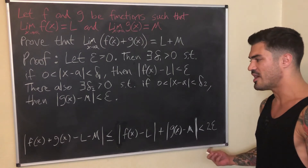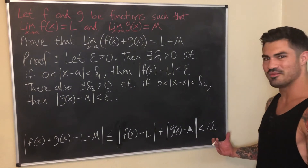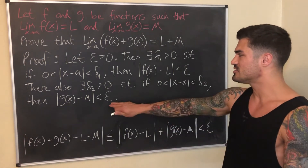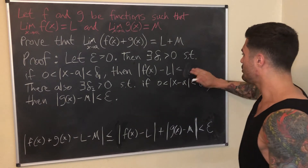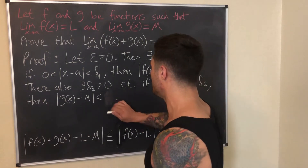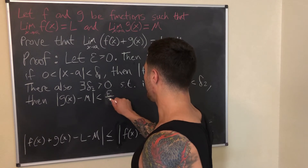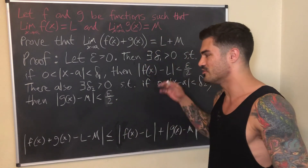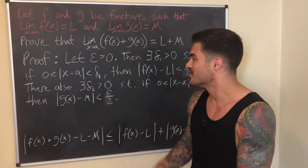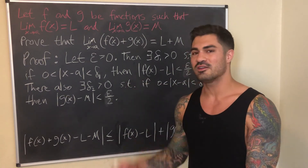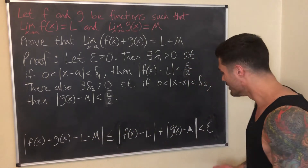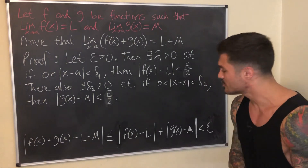But I want this to be less than Epsilon, not 2·Epsilon. So what can I do? I need each piece to be Epsilon/2 instead of Epsilon — that's the clever trick. This is exactly why textbooks just throw 'Epsilon/2' out there like it's obvious. It's not obvious — they've done this scratch work ahead of time and erased it. This scratch work is what tells you how to adjust your Epsilon accordingly.